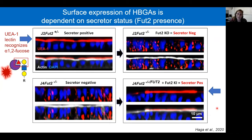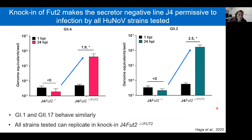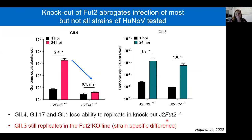We then infected these lines with norovirus to test permissivity. For the J4 FUT2-negative line with FUT2 knocked in, neither GII.4 nor GII.3 infected in the presence of bile acid alone, but when we added FUT2 back, these lines became permissive to norovirus infection. GII.1 and GII.17 behaved similarly—unable to infect J4, but able to infect J4 with FUT2 added. In the knockout line, GII.4 infection was lost, and GII.3 was still able to infect the secretor-negative line, consistent with prior epidemiological data.